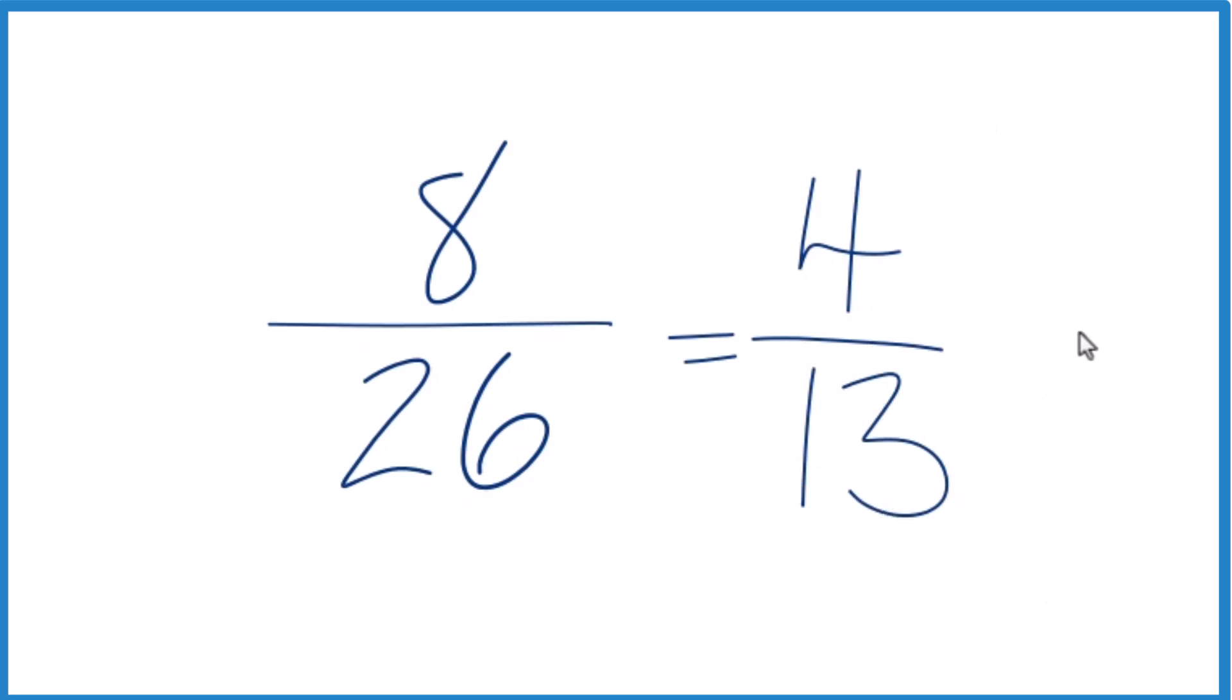When we take the fraction 8/26 and simplify it down to lowest terms, we get 4/13. These are equivalent. If you divide 8 by 26 or 4 by 13, you get the same decimal answer. They're equivalent, just that we've simplified 8/26 to 4 over 13.